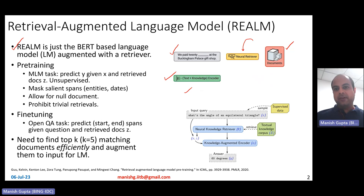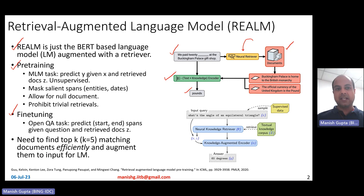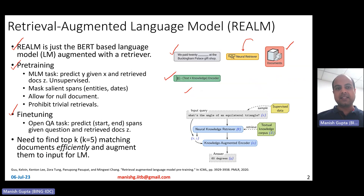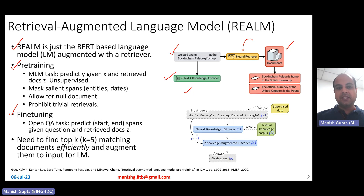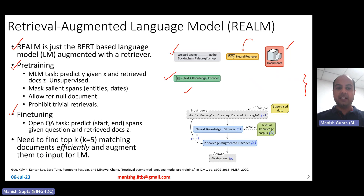Now let's look at how this is trained. It's trained in two parts: pre-training and fine-tuning. At pre-training time, what you see on the right side is the masked language modeling task, but with retrieval. You try to predict Y, which is basically the masked word, given X — the overall context, the entire sentence — and retrieved document Z, which are documents getting retrieved from the document collection.